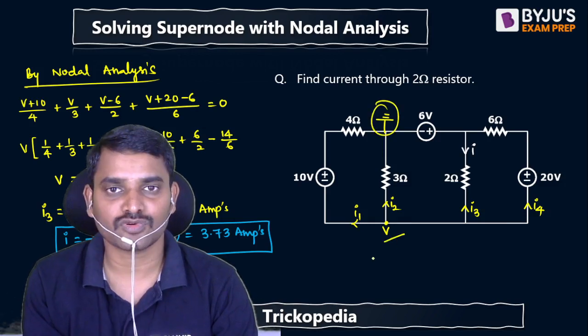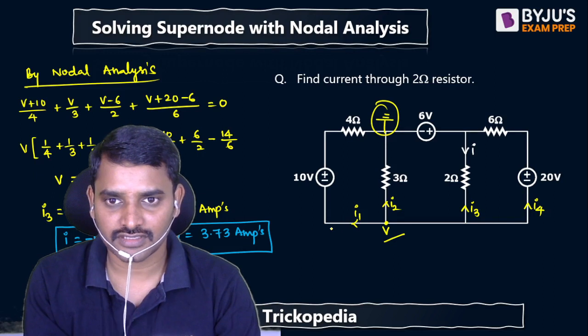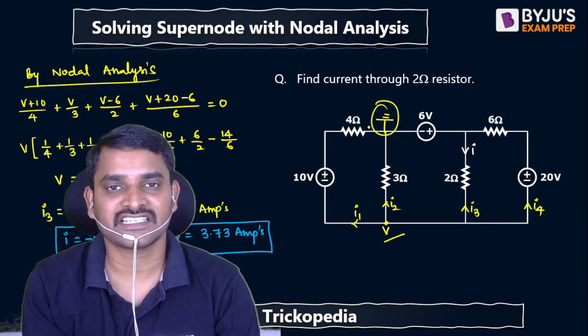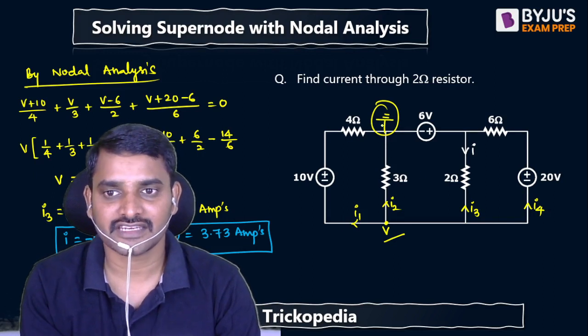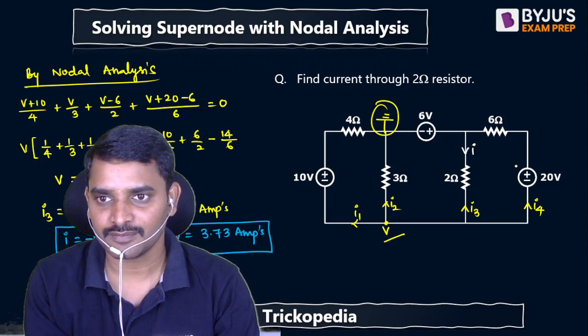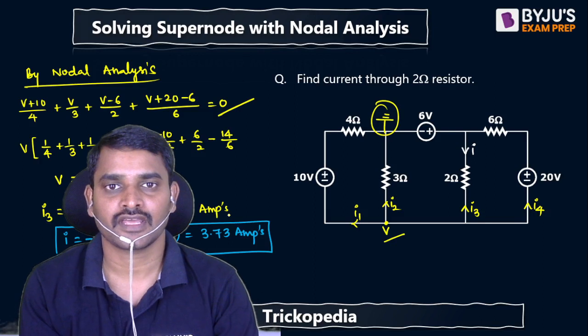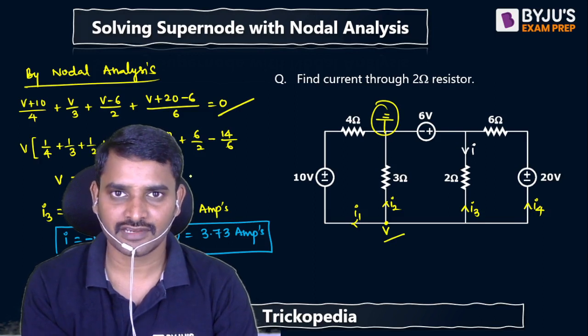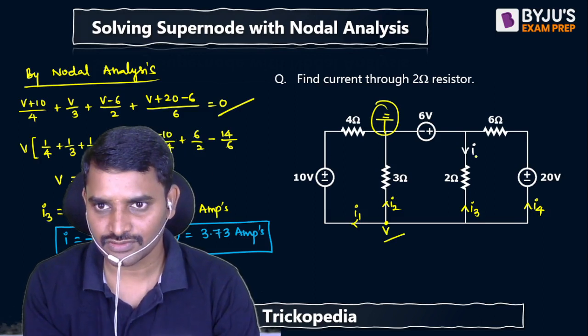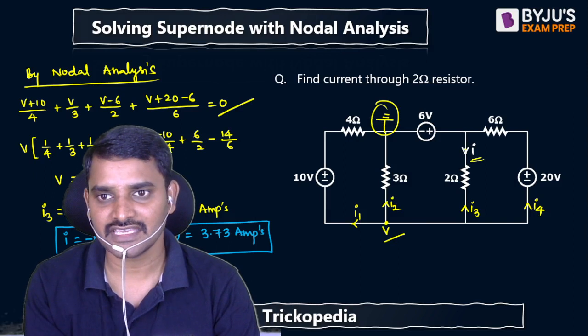Then I have mentioned this voltage as v. Then I have got: v plus 10 by 4, v by 3, v minus 6 by 2, v plus 20 minus 6 by 6. So this is the equation I have got. Solve it, you will get v value.